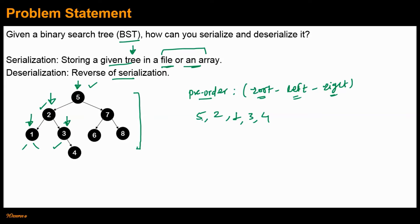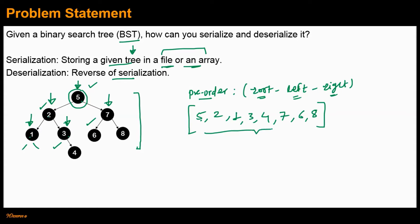Until this point, we have visited nodes 5, 2, 1, 3, 4. The left subtree for node 5 is now done. We go to the right subtree of node 5, which starts from node 7. Node 7 is visited, then node 6, and finally node 8. So the pre-order traversal for this binary search tree is the array [5, 2, 1, 3, 4, 7, 6, 8]. We can call this array the serialized form of the given BST, provided we are able to recover the original BST from it.